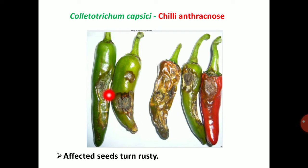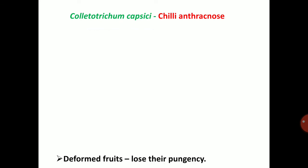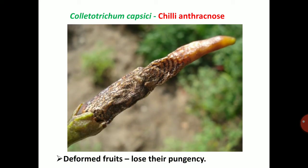These are all the severely infected chili fruits, with black colored dots resembling the acervuli. Deformed fruits lose their pungency. In severe cases, infected fruits become straw colored, and at the same time produce acervuli on concentric rings.